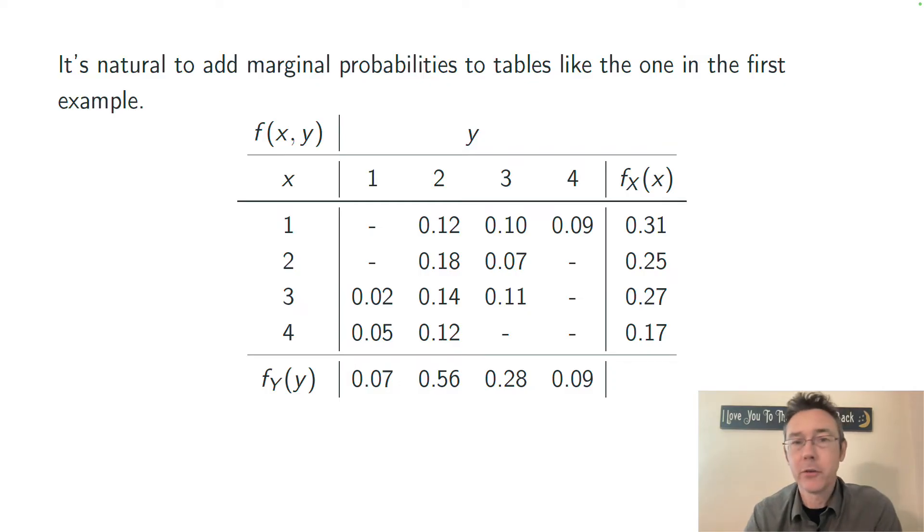Let's go back to that example that we started with. This is the same table as before, and let's get some marginal totals. For instance, I'm taking that first row, adding up all the values 0.12, 0.10, and 0.09 to get 0.31. That's the probability that x equals 1. Similarly, the probability that x equals 2 is 0.25, adding up 0.18 and 0.07, all the different values that y could take when x is 2, and so on.